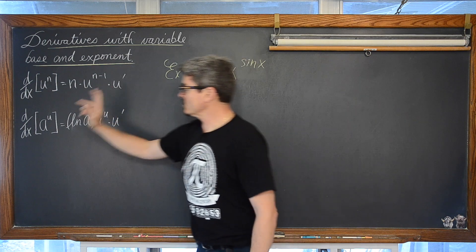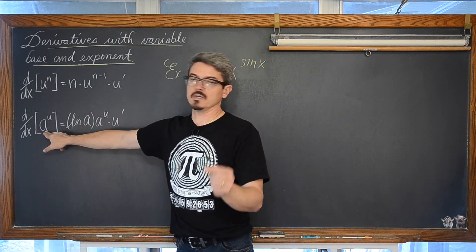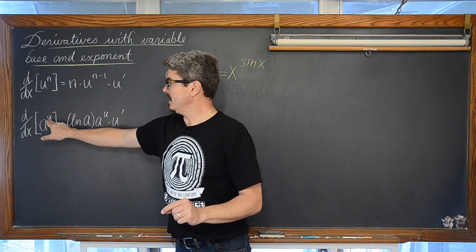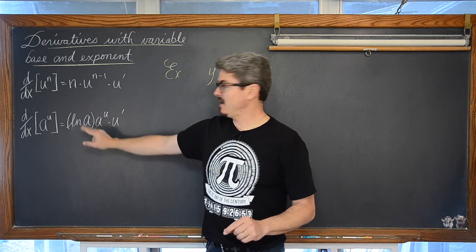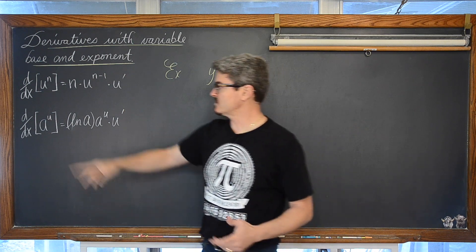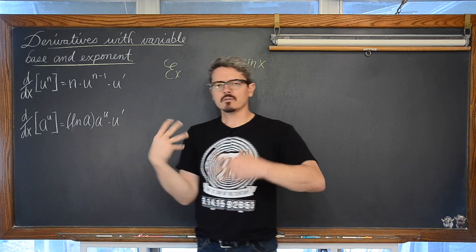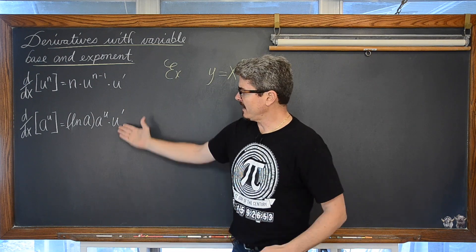And we have the derivative of a to the u where the base is now fixed as opposed to the variable is equal to the natural log of a times a to the u times u prime.